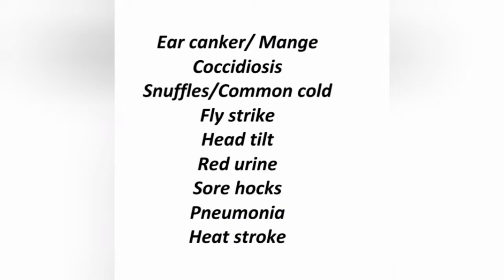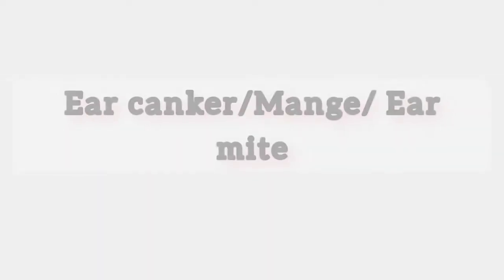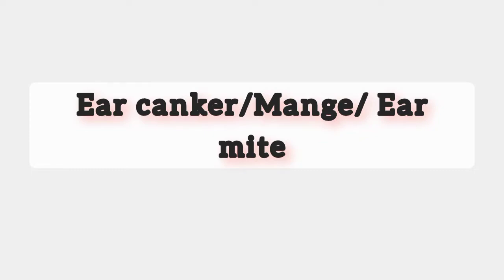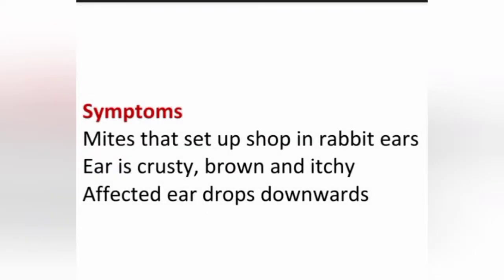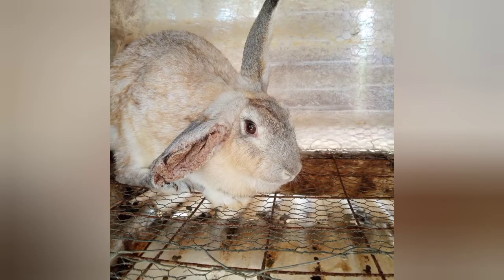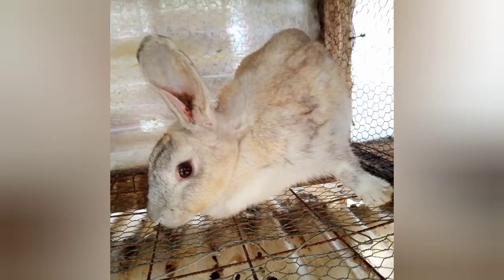The first common disease is known as ear canker, mange, or ear mite. The symptoms are mites that set up shop in the rabbit's ears. The ears look crusty, brown, and itchy, and the affected ear drops downwards. This is caused by rats and hay being the carriers of the mites.